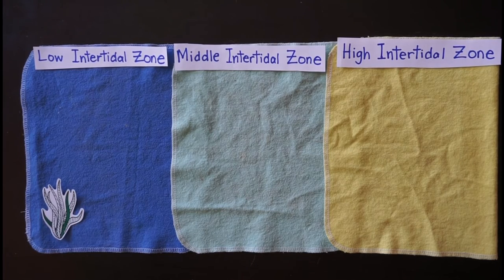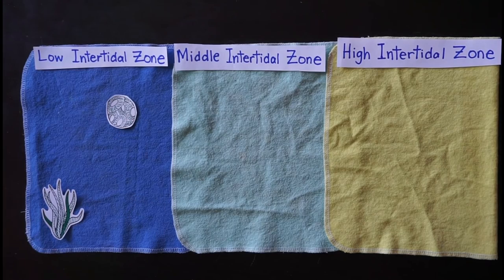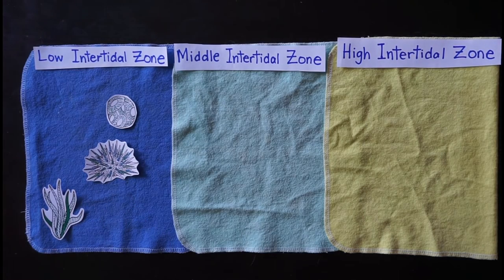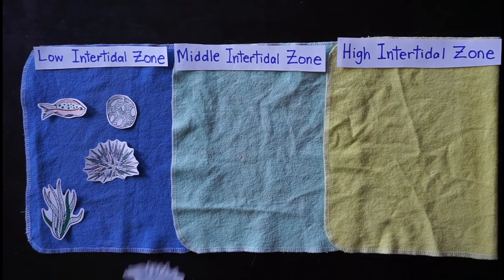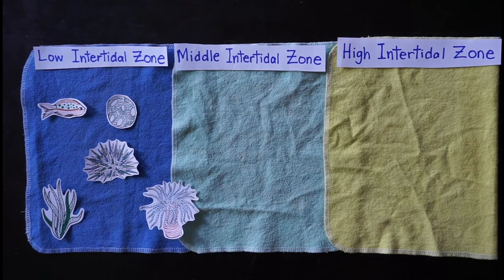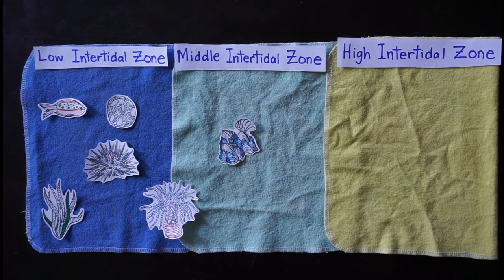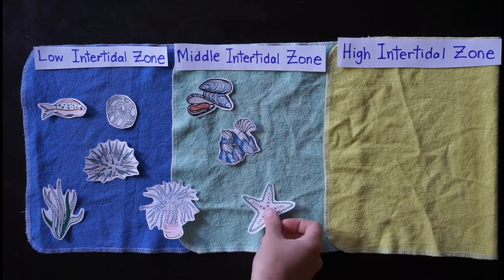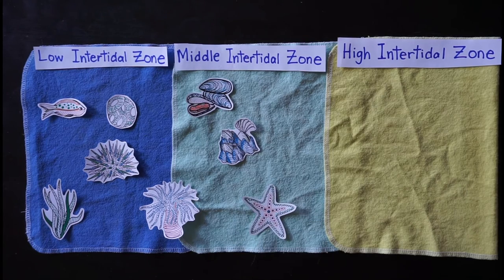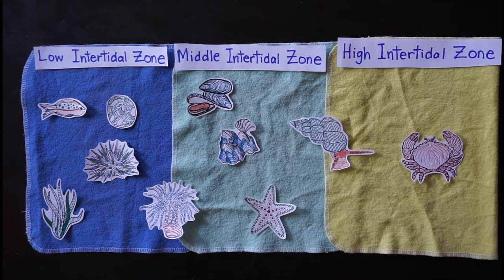we learn about different types of organisms that we can find in the rocky shore intertidal zone. So we take a coloring break to create our own rocky shore intertidal zone and talk about how different organisms are adapted to different environments.